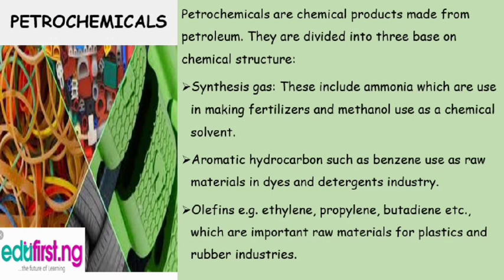Petrochemicals: From what we discussed before, petrochemicals are chemical products made from petroleum. They are divided into three groups based on chemical structure. The lighter products that emerge first — such as butane, propane, and other early fractions — are usually referred to as petrochemicals.